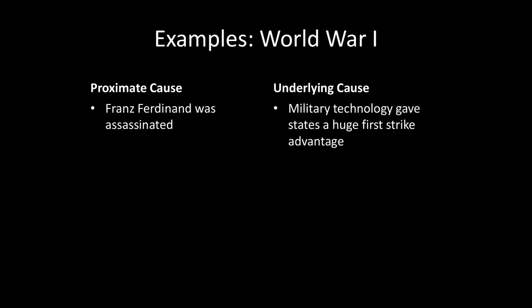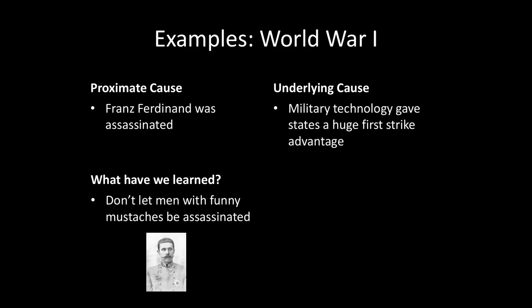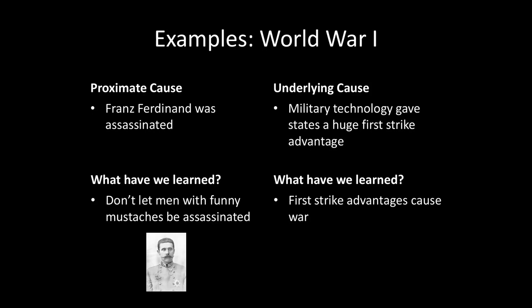However, an underlying cause of World War I is that military technology — at least in the minds of policymakers — gave states a huge first-strike advantage at that time. If we look at these two causes, we get very different policy prescriptions. For the proximate cause, the lesson is that we should not let men with funny mustaches be assassinated, especially if they're the heir apparent to a throne. If we look at the underlying cause, what we're learning is that first-strike advantages cause war — something we'll discuss much more in future lectures.